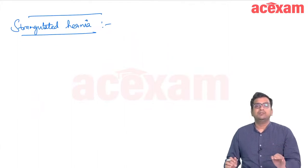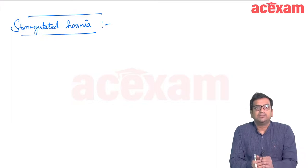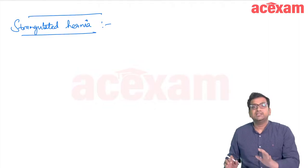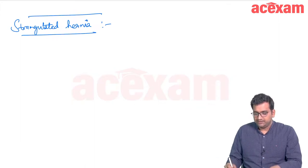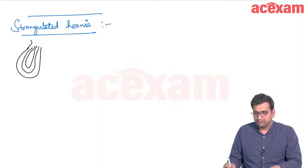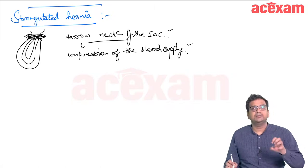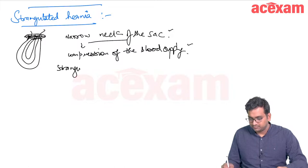The next topic is strangulated hernia. A patient with strangulated hernia presents with a history of inguinal hernia followed by sudden sharp pain in the hernia region with the hernia no longer reducing. On clinical examination, there is severe pain, a tense and tender inguinal hernia with no cough impulse, and features of intestinal obstruction. This is a surgical emergency.